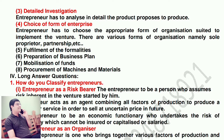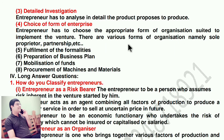Detailed investigation: entrepreneur has to analyze in detail the product proposed to produce. Choice of form of enterprise: entrepreneur has to choose the appropriate form of organization suited to implement the venture — various forms include sole proprietorship, partnership, etc. Other functions include fulfillment of formalities, preparation of business plan, mobilizing of funds, and procurement of machines and materials.